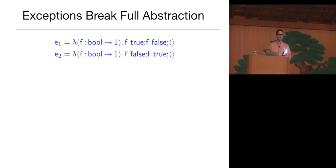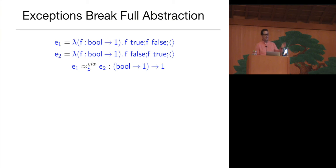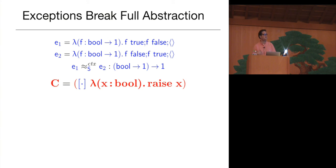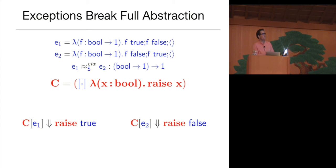Here are two programs in our source language. They both take a function that accepts Booleans. The first calls it on true and then false and returns unit; the second calls it on false and then true and returns unit. They call the function on all possible inputs, but in a different order. These functions are actually equivalent in the source language because the only effect is non-termination. If f diverges on either true or false, both programs diverge; if it terminates on both, they both terminate with unit value. But we can easily distinguish them in the target language using exceptions — the exceptions give us an information side channel not present in the source language. A context can just raise the first value it's called on: the first program will get a true value exception, and the second will get a false value exception.